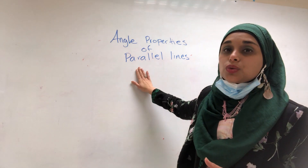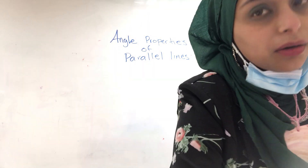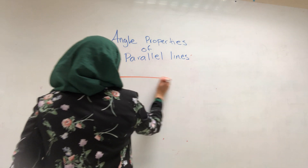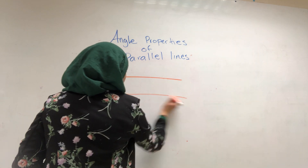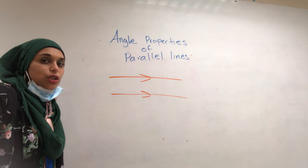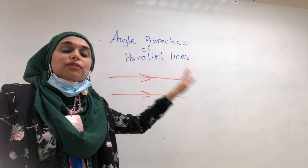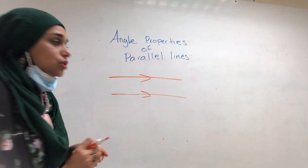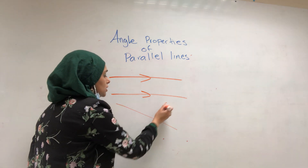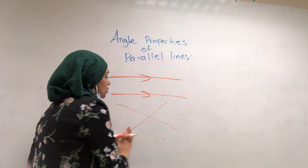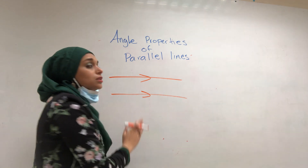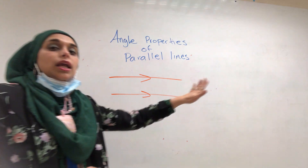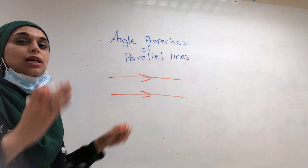To start off, let's break down the first word: parallel. What is parallel? Parallel means when you have two or more lines that are traveling in the same direction. Parallel lines never meet — they never intersect. In the last video I talked about intersecting lines, which are lines that cross each other. So parallel lines will never ever cross each other; at no point will these two lines intersect.